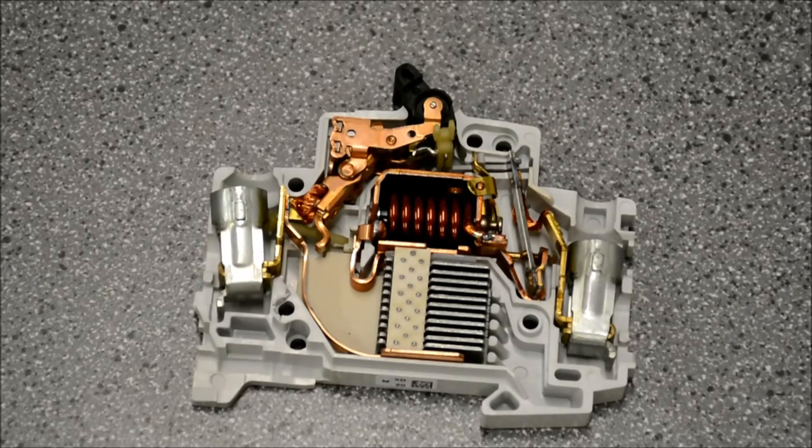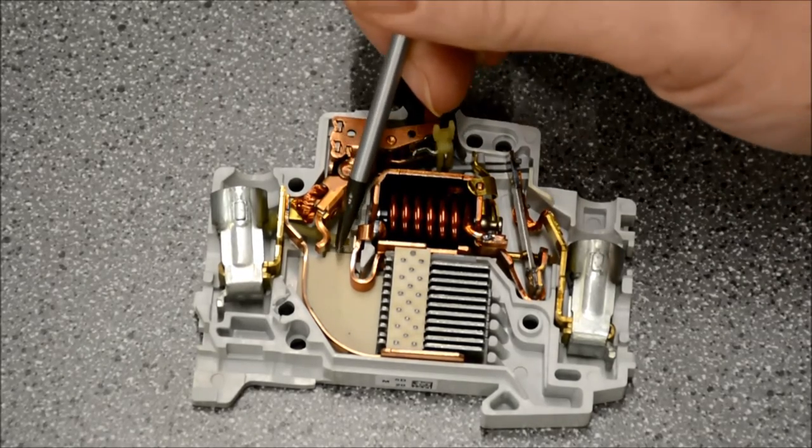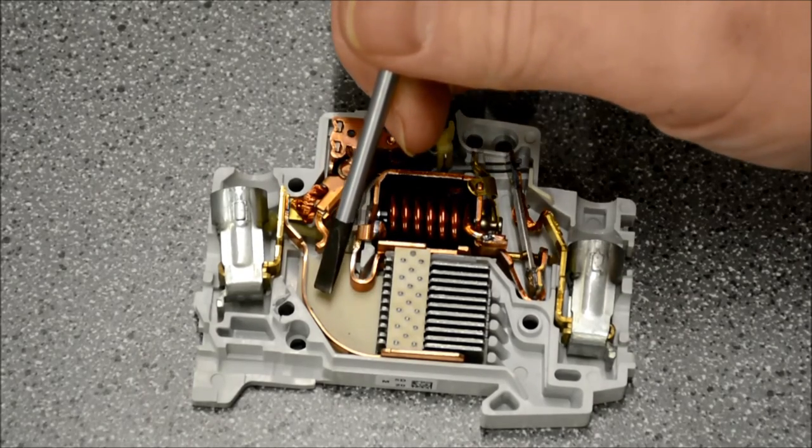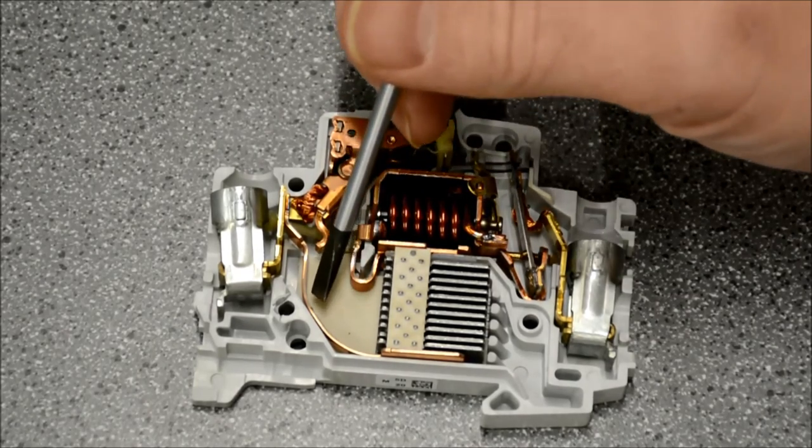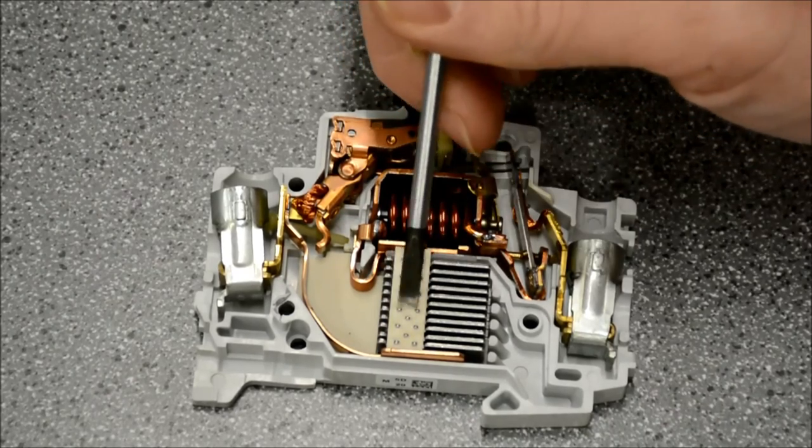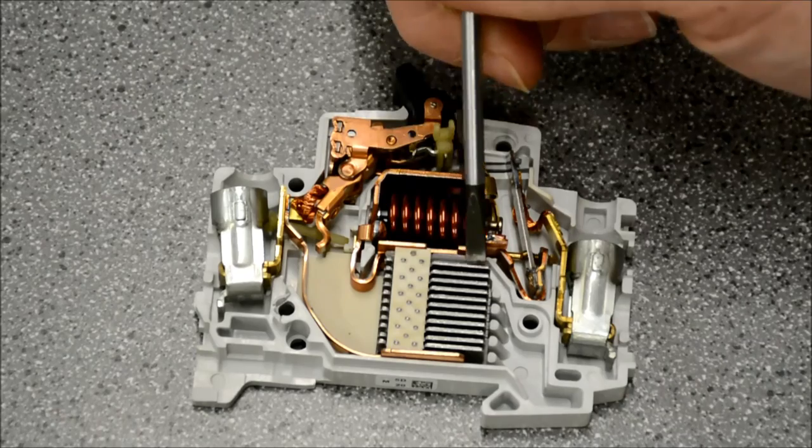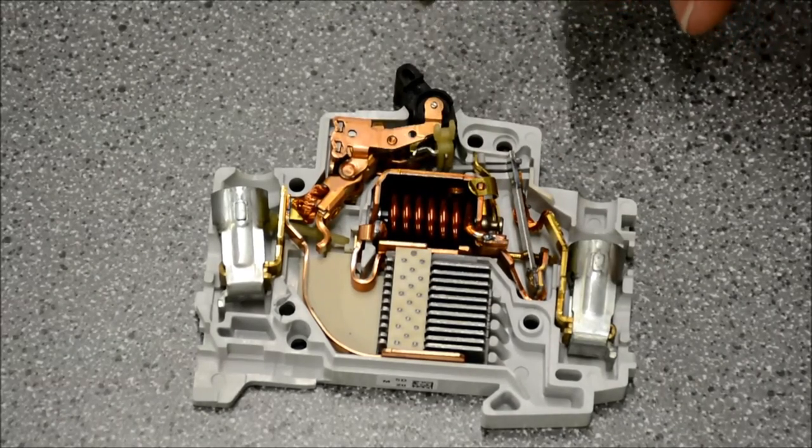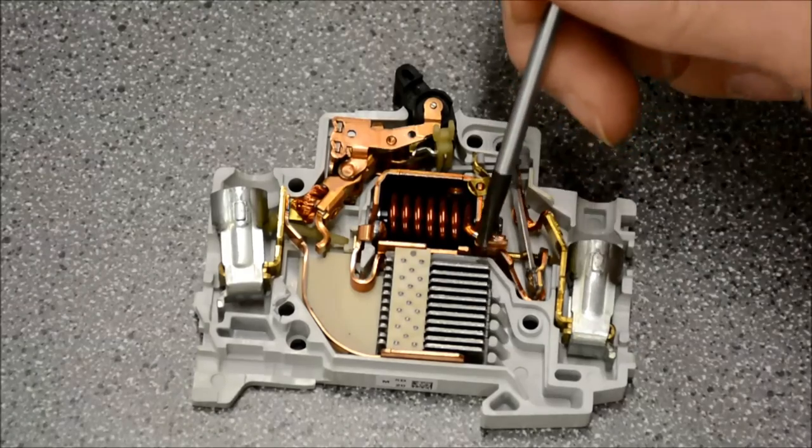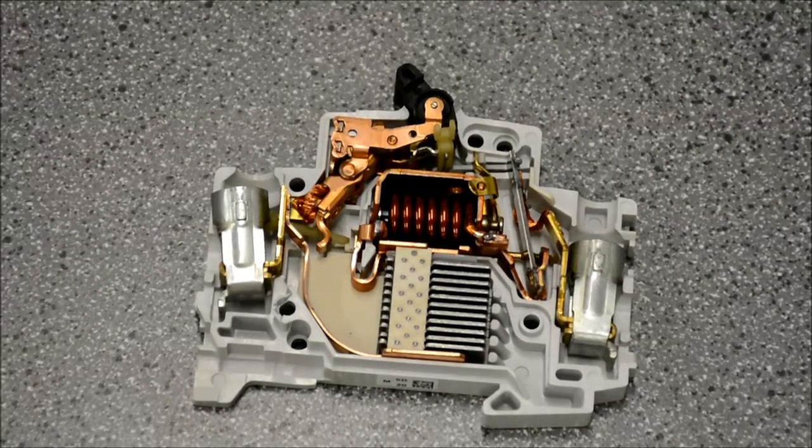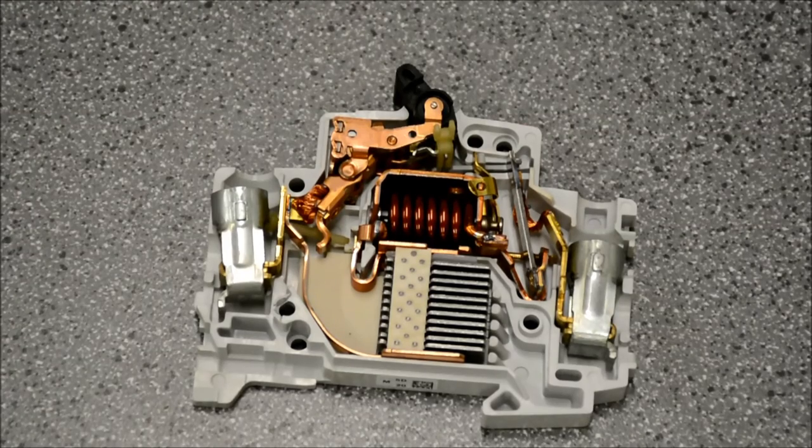So as the circuit breaker opens, that large arc travels down and it is funneled in this direction by this metal strip, and then it is directed through these arc chutes. These arc chutes serve to dissipate that arc. It takes one large arc and breaks it into several smaller arcs, and it also acts as a heat sink to absorb the heat and help the circuit breaker dissipate it effectively.